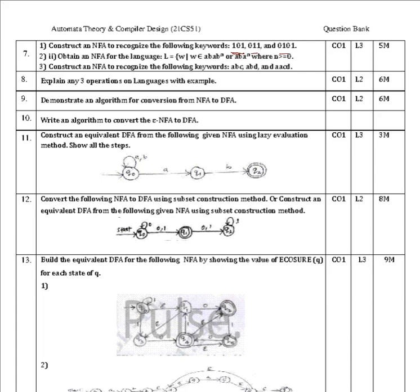We have studied the theorem: if there exists a DFA, it should have a regular expression. With the help of regular expressions you construct the NFA, which will have epsilon transitions. You can refer to the textbook for these solutions. Then also explain any three operations on languages with examples.